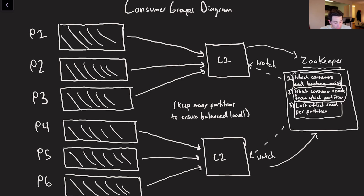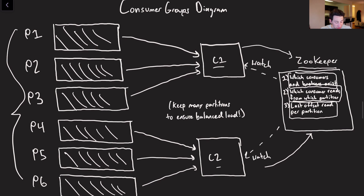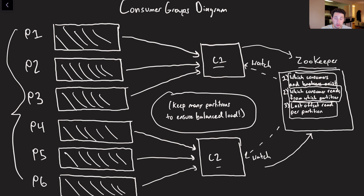When these guys register themselves to Zookeeper, they're going to see that there are two different consumers in this consumer group. Since there are six total partitions and two total consumers, C1 is going to grab the first three partitions, and C2 is going to grab the next three partitions. Having a lot more partitions is going to ensure that the load stays relatively balanced — if there were only two partitions and one had a lot more messages than the other, one consumer might be doing quite a bit more work. By ensuring we have a lot of relatively evenly distributed partitions, this is quite a bit easier to balance. Ideally, we always want a lot of Kafka partitions.